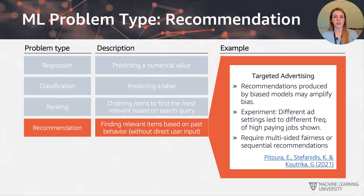The example here is a targeted advertising example where Pitora, Stefanidis, and Kotrika showed that different settings in the browser led to different ads being shown. To fix this kind of behaviour we need to implement a bias mitigation technique, check what recommendations are being made to different subpopulations, and then equalise a certain measure of fairness to mitigate any issues and avoid amplifying the bias further.